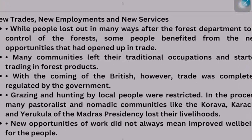Some forest workers left their forest work and went for other occupations. They started trading in forest products. Some people took up agriculture. Because they were no longer allowed to graze their cattle or to hunt. And many tribal areas — like Korawa, Karicha, Yerukula — were given the name 'criminal tribe.' These tribals were labelled criminals and were forcibly sent to plantation areas like Assam, and were not allowed to come from there.